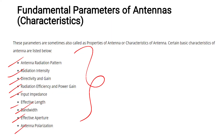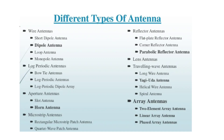We are able to discuss the parameters and study different types of antennas. We are able to analyze the different types of antennas and use the short dipole antenna and dipole antenna. The key topics include working, advantages, disadvantages, and applications.